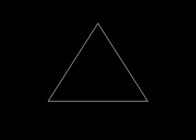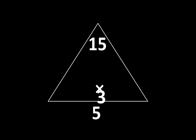Sometimes you'll see it written like this: 3 times 5 is equal to 15. And whenever we see this, we know that at the same time we can think of this as 5 times 3 is equal to 15, because of the commutative property of multiplication. The order of the factors does not change the product.